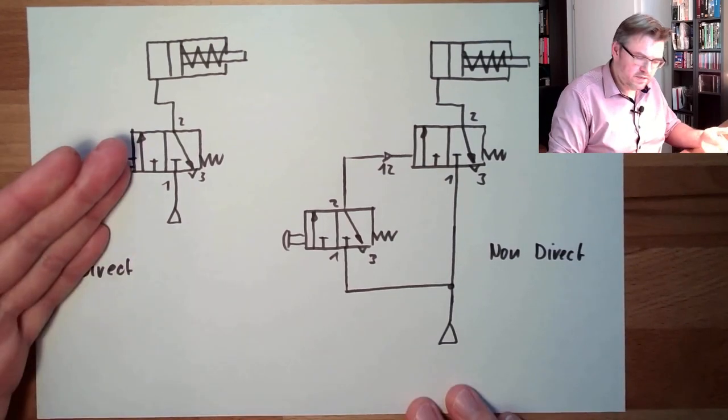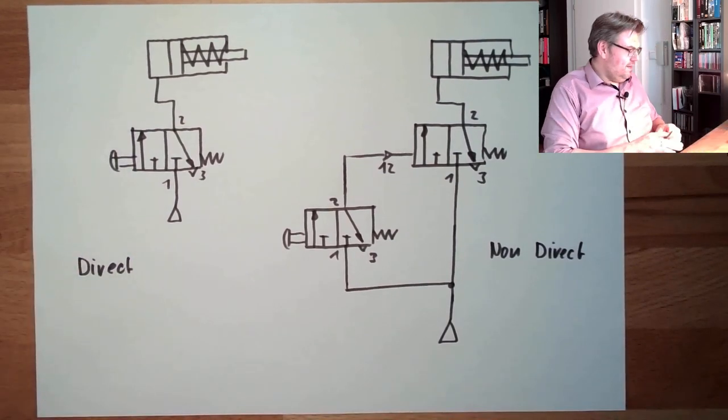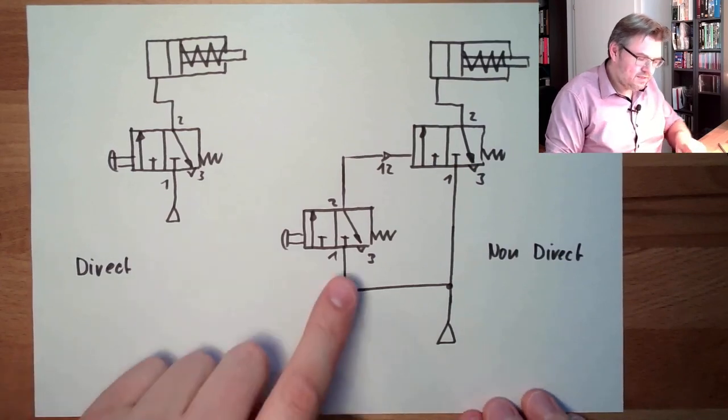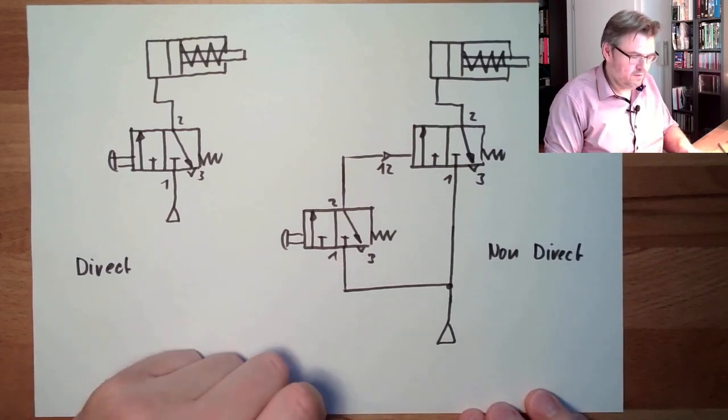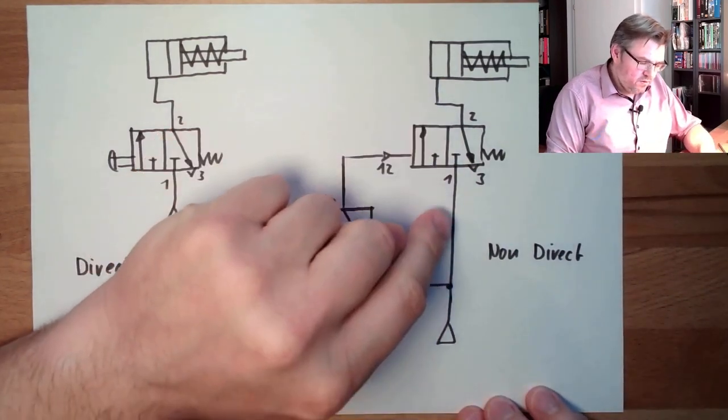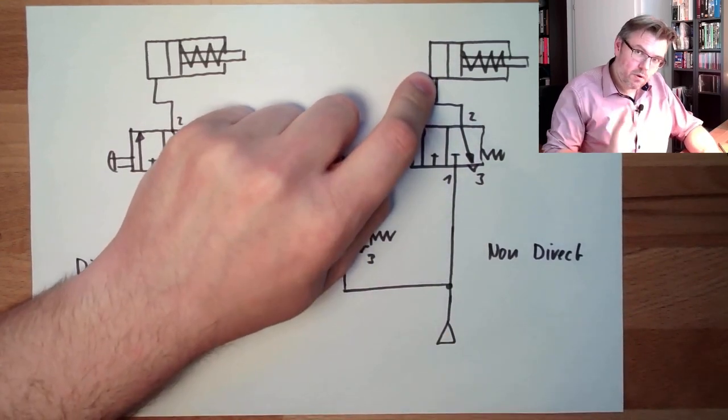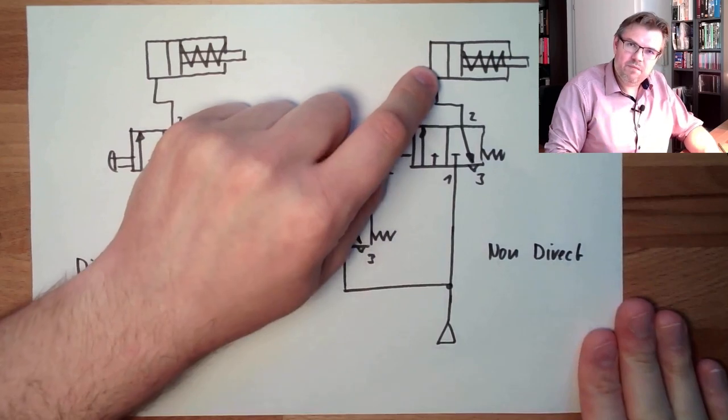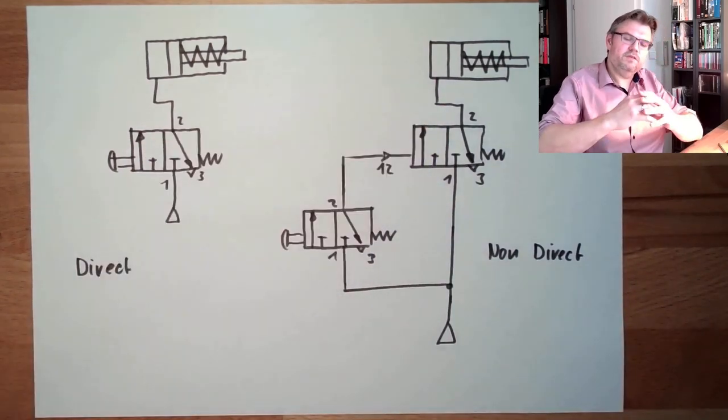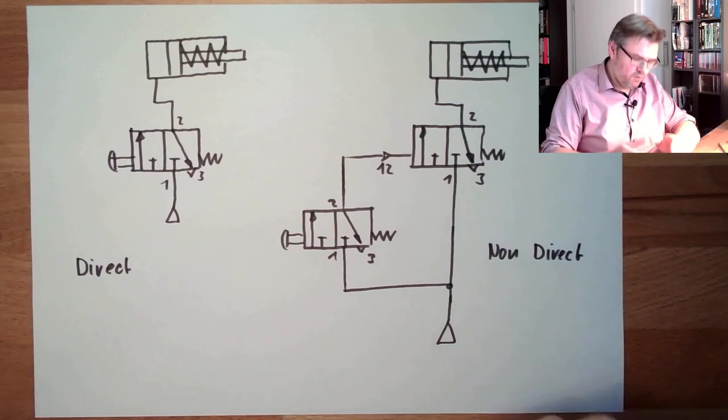This is much simpler, you say. However, this is more usual. Why? Because usually here we want to have power. The cylinder we want to have power because this is our working element, so the cylinders are usually powerful, there's a reasonable size of cylinder and so on.